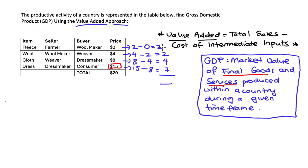Two plus two is four. Four plus four is eight. Eight plus seven is 15. So with the value added approach, we're really reimagining the value of our final goods and services as a sum of the value added at each stage of production.